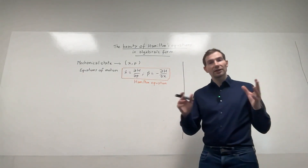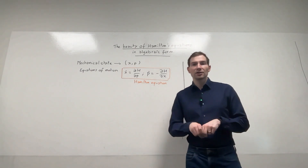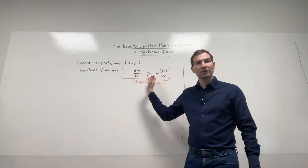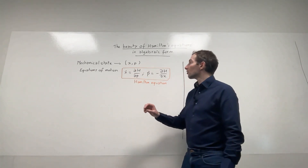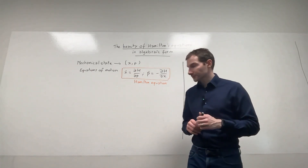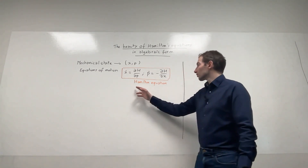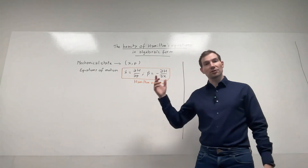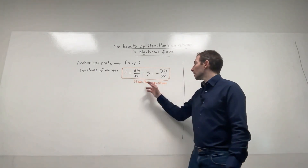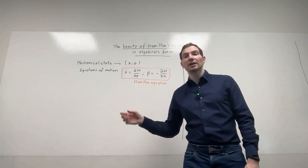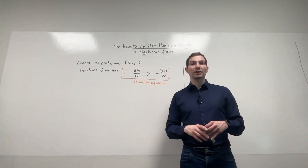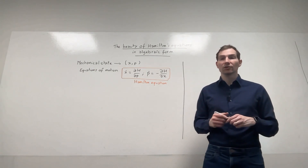Just to state, in case you are not familiar or have forgotten how Hamiltonian mechanics works — it's a formulation of mechanics where you represent the mechanical state of the system via its position X and momentum P, just for one degree of freedom for simplicity. The equations of motion are Hamilton's equations: X-dot equals the partial derivative of H with respect to P, and P-dot equals minus the partial derivative of H with respect to X. The function H is called the Hamiltonian and represents the energy of the system.